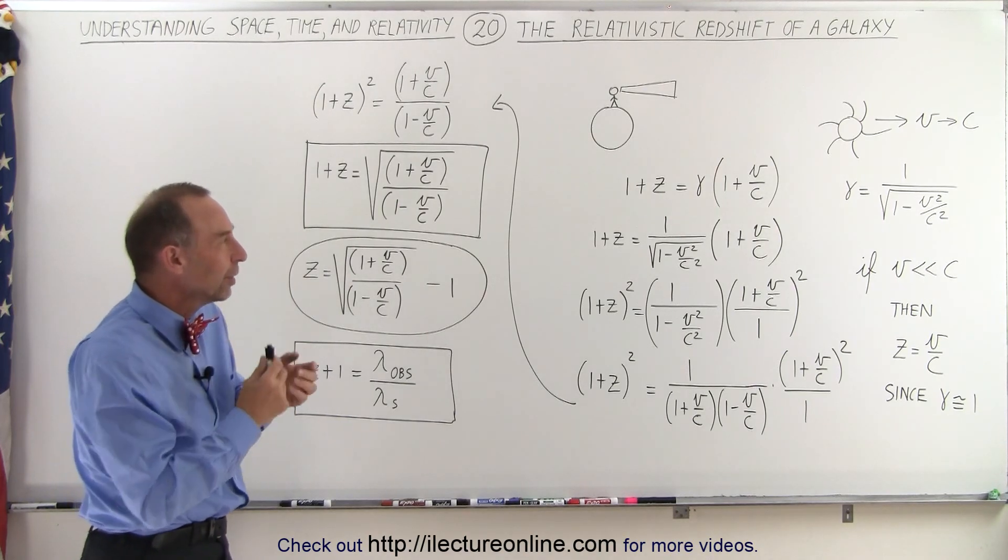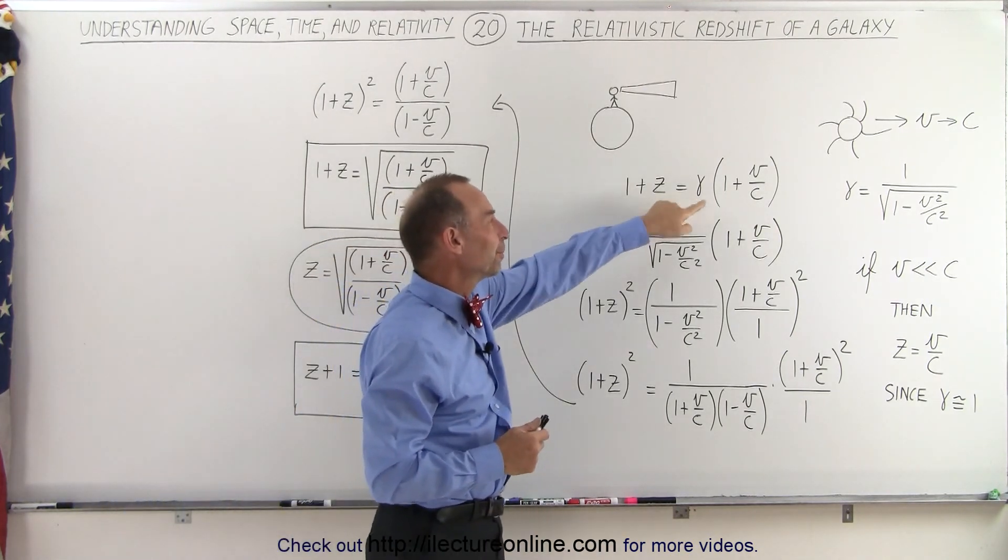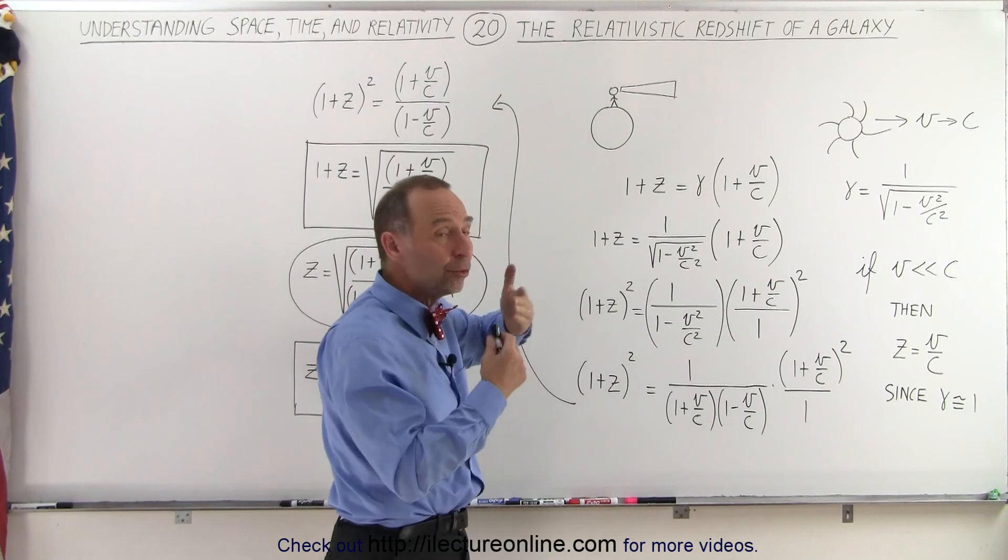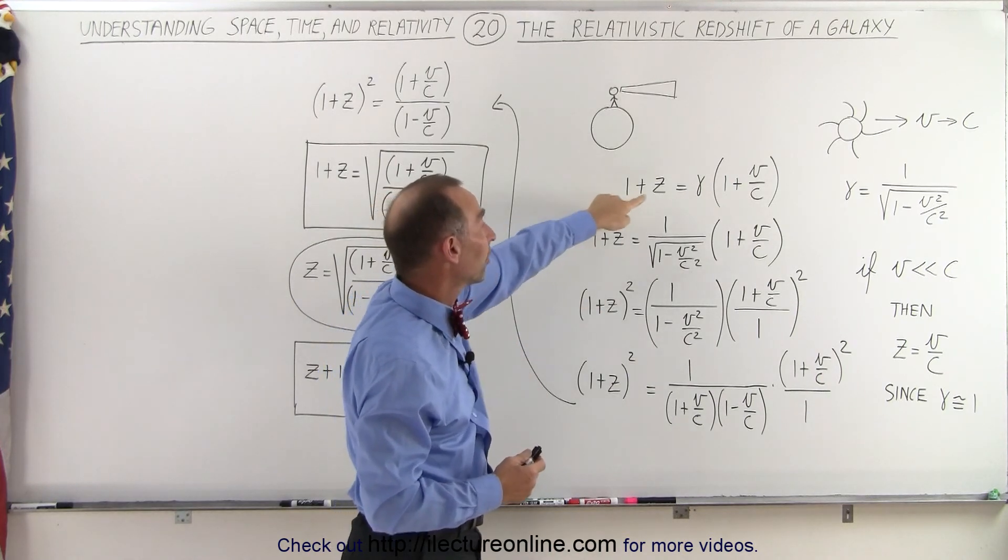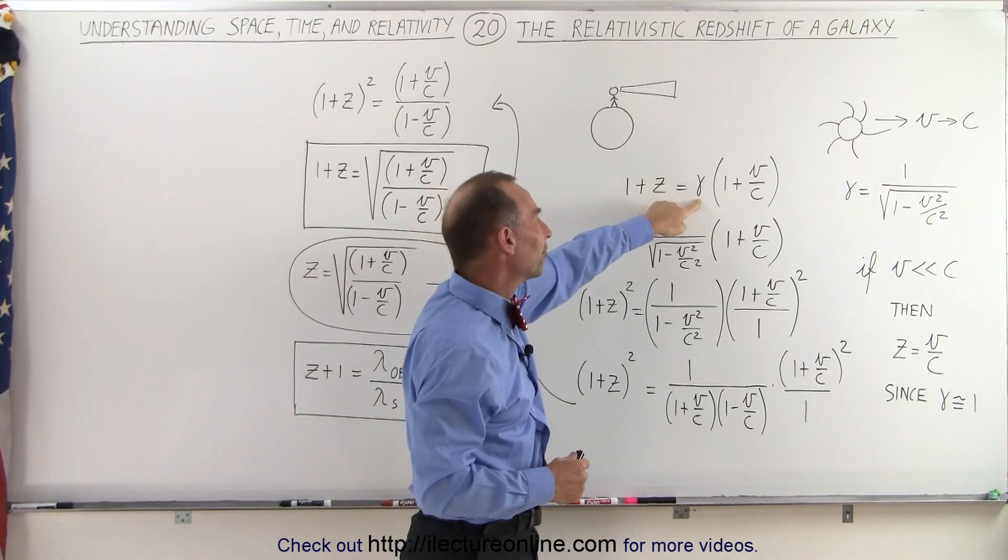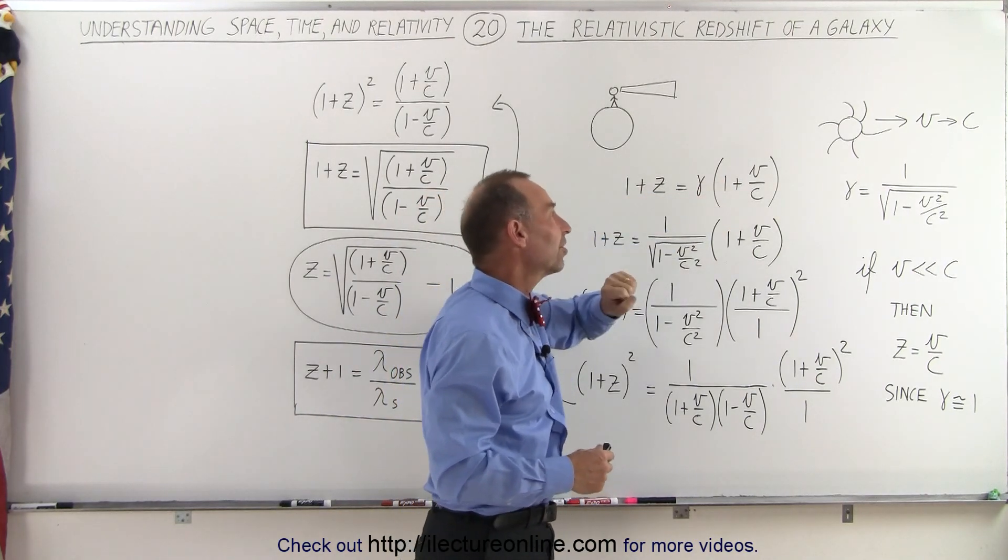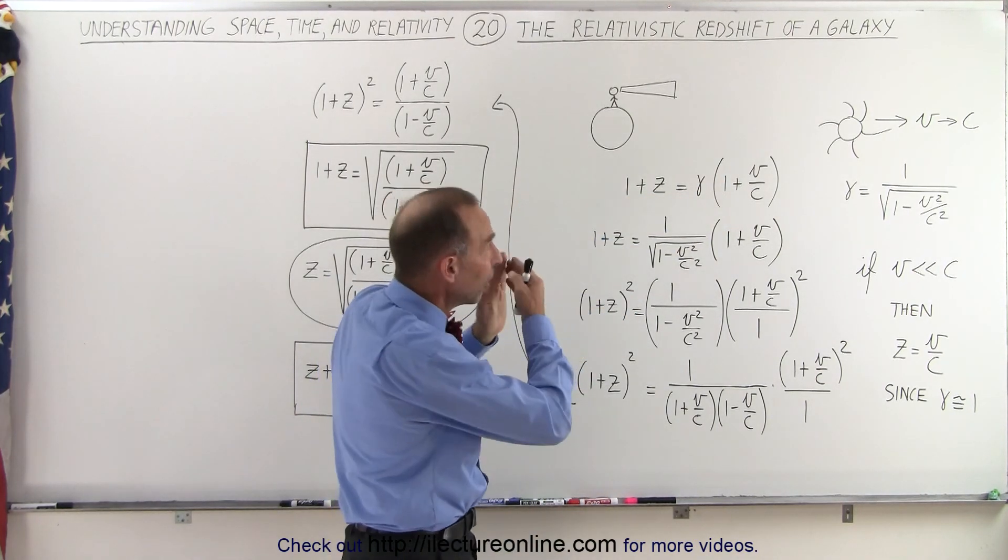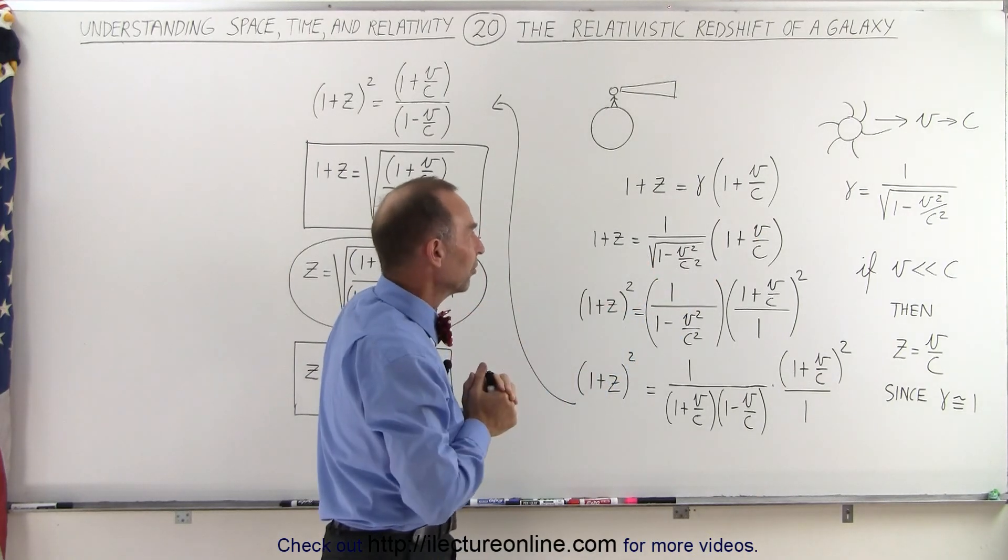We need to take into account the Lorentz factor. We end up with a new equation: 1 + z (we'll see what z is in a moment) equals the Lorentz factor times (1 + v/c). This is for the case of redshift—a galaxy moving away from us.